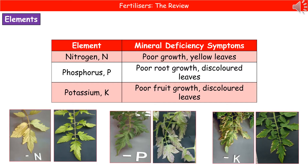You also need to know what the actual symptoms of these different mineral deficiencies would be in our plants. So if we try to grow them in soil that was lacking in one of these essential elements, what would those plants look like? What observable features would there be that give us the hint about what mineral is actually deficient in the soil?